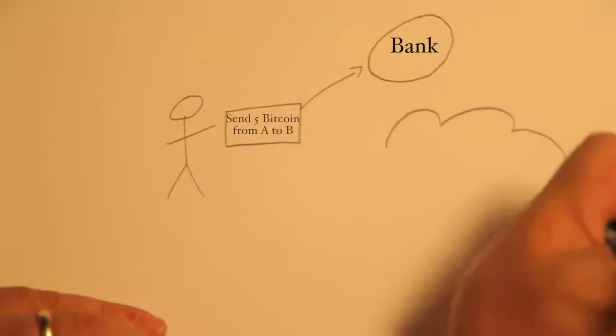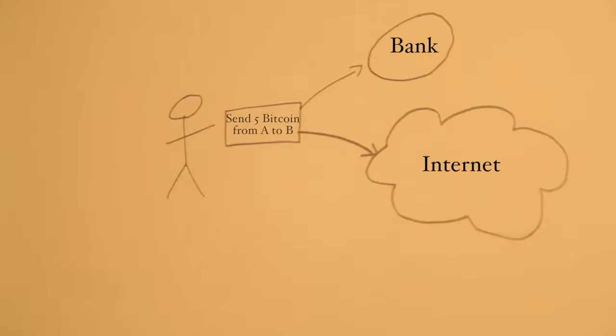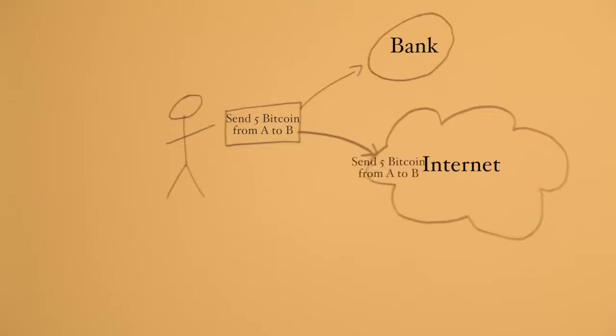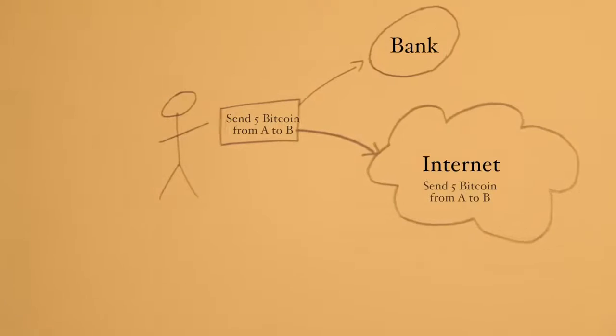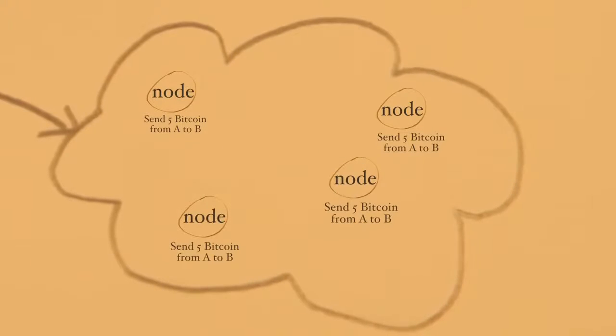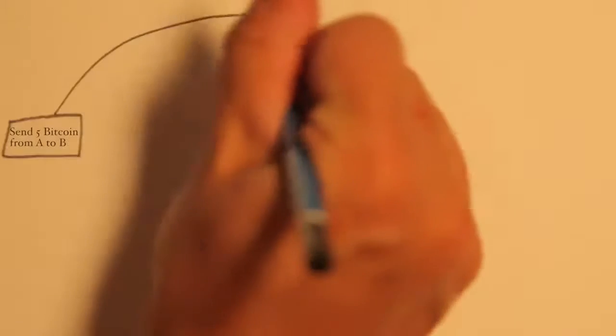With Bitcoin all transactions are public. So instead of sending a private message to your bank to move a number from one place to another, your computer shouts it on a public internet channel which all Bitcoin nodes are listening on. Two key things happen once a transaction is announced to the network. First, every transaction should be heard by every Bitcoin node in the network. And secondly, every Bitcoin node must have a chance to vote on whether a transaction was valid or not. To make both things happen, Satoshi did something very clever, known as proof of work.